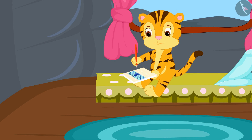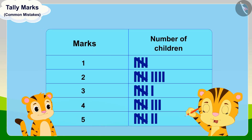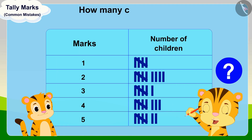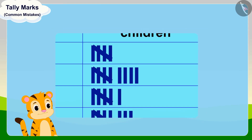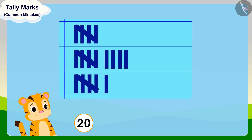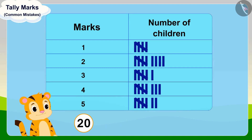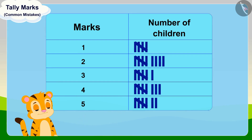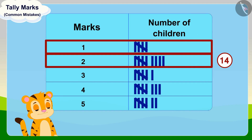When Mrs. Khan's table was completed, Shere Khan came there. Mrs. Khan showed him the table and asked, 'Shere Khan, can you see this table and tell me how many children got less than three marks?' Shere Khan added the number of tally marks and quickly replied, 'Twenty children got less than three marks.' Children, is Shere Khan's answer correct? Actually, while adding, Shere Khan also included the tally marks of those children who got exactly three marks.